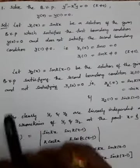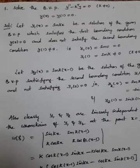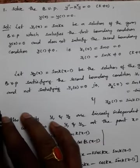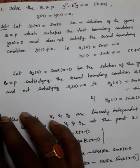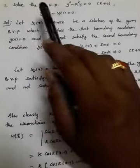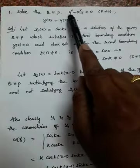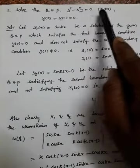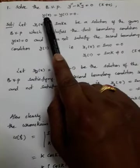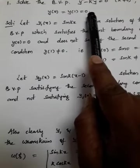We will solve the second order differential equation with boundary value conditions by constructing the Green's function. The problem given is: solve the boundary value problem y'' - k²y = 0, where k is not equal to 0, and the boundary conditions are y(0) = 0 and y(1) = 0.